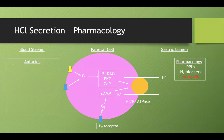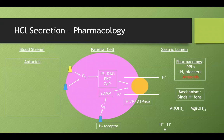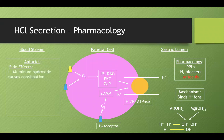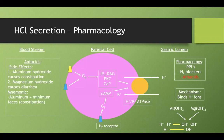Antacids work by binding free hydrogen ions in the lumen. Aluminum hydroxide or magnesium hydroxide dissociate into hydroxyl ions, which neutralize the stomach acid to create water. Side effects: aluminum hydroxide causes constipation, magnesium hydroxide causes diarrhea. A helpful mnemonic — aluminum gives you minimum feces (constipation), magnesium gives you mega feces (diarrhea).